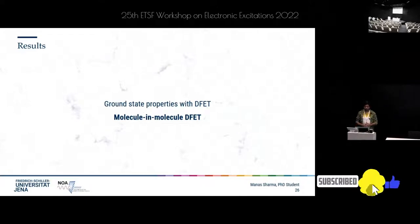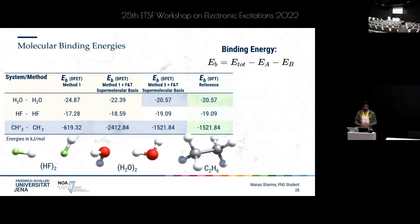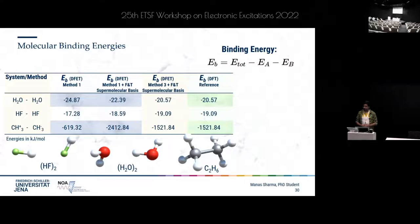Before moving to excited state properties, let me briefly show some ground state results from molecule-in-molecule DFET — specifically some binding energies. Bear in mind these serve as a benchmark against regular DFT. For weakly interacting systems like the H2O dimer or HF dimer, Method 1 with or without freeze-and-thaw performs reasonably well. However, for strongly interacting systems such as the ethyl molecule partitioned at the carbon-carbon covalent bond, there is a huge error. Method 3 gives exact results as regular DFT, though it requires a supermolecular basis.